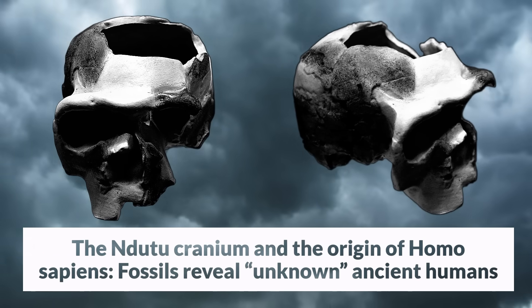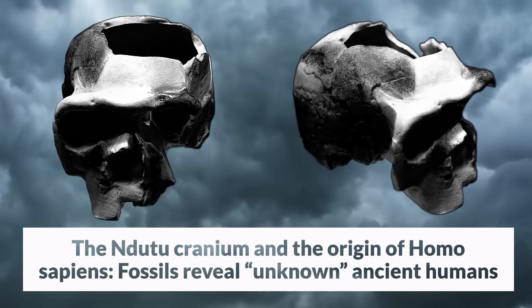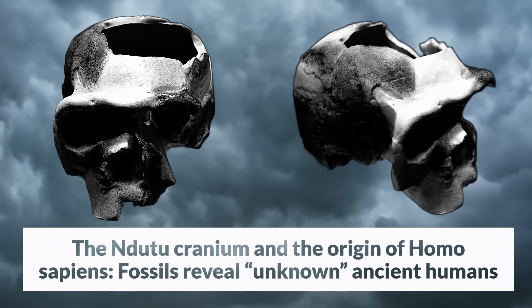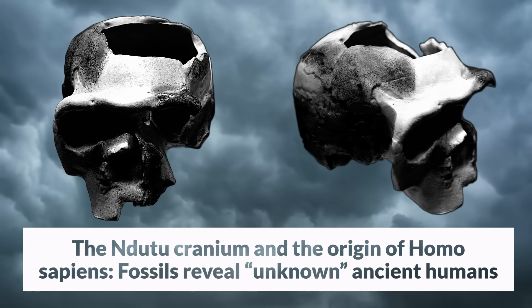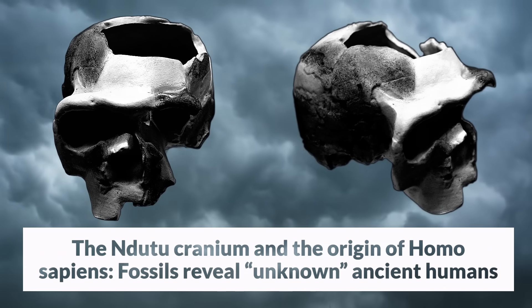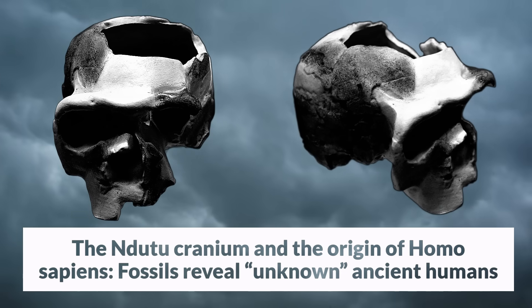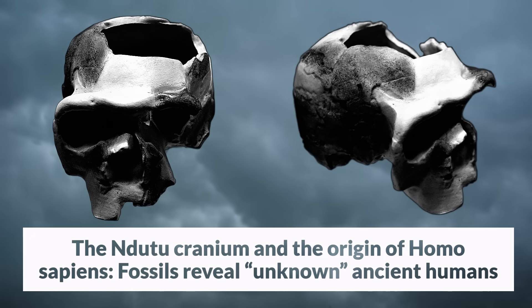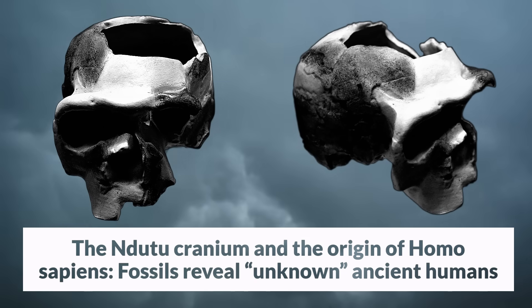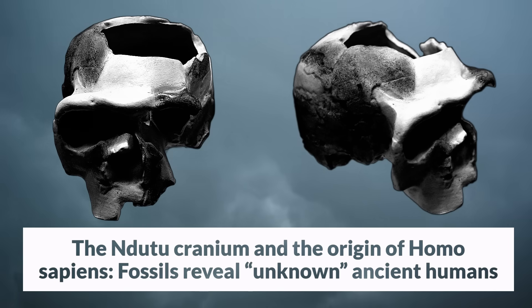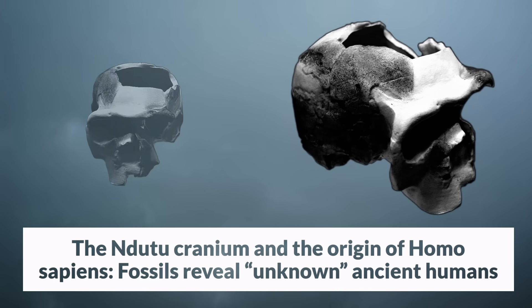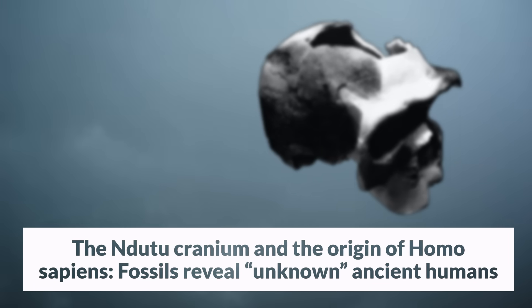In a new study, researchers compared 600 different morphological features of the skull across 95 different human skulls and mandibles. They applied a set of mathematical techniques to this data to generate branching diagrams that depict the phylogenetic relationships of the various hominin species.